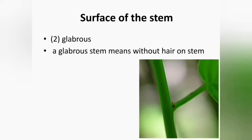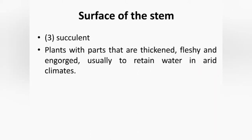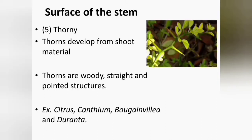A glabrous stem means without hair on the stem. Succulent plants are plants whose parts are thick and fleshy, usually to retain water in arid climates. The photosynthesis process of succulents is mainly through stems rather than leaves, mainly due to the absence of leaves or having very small leaves. Thorns are developed from shoot materials; they are sharp, straight and pointed structures found in many plants such as Citrus, Carissa, Bougainvillea and Duranta.